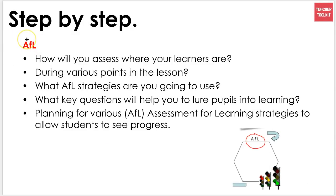AFL stands for Assessment for Learning. With your specification and assessment criteria to hand, consider how you can link the different learners in your class to the assessment criteria for this lesson. AFL strategies to gauge student progress include: students using whiteboards for instant answers, thumbs up/thumbs down, red/yellow/green cards, questioning techniques like pose-pause-pounce-bounce, and the Question Matrix resource on teachertoolkit.co.uk. Give assessment for learning some consideration so students can assess themselves in terms of making progress.